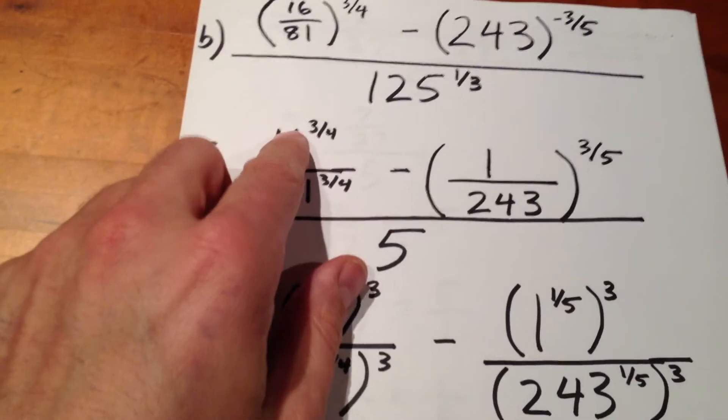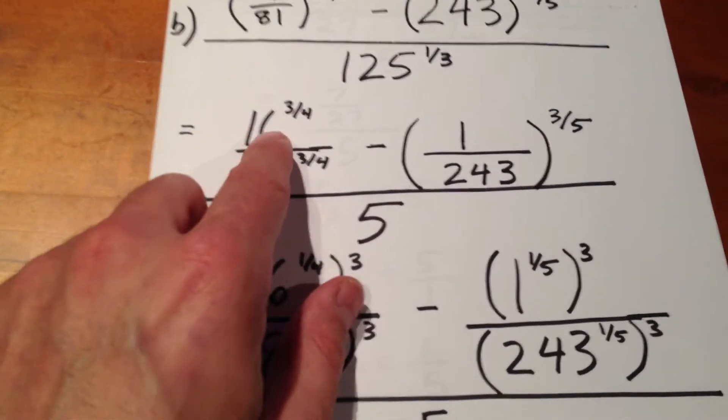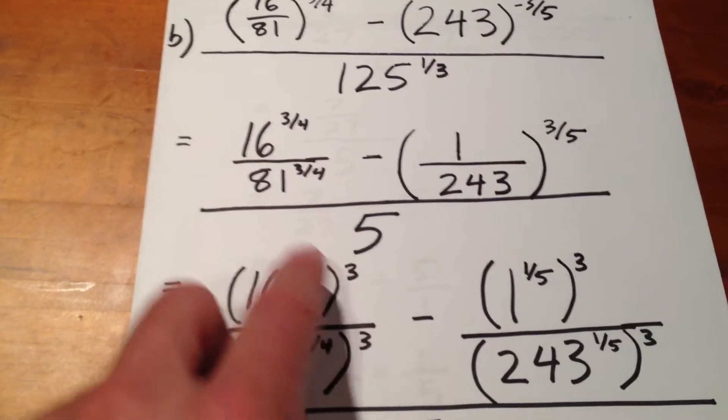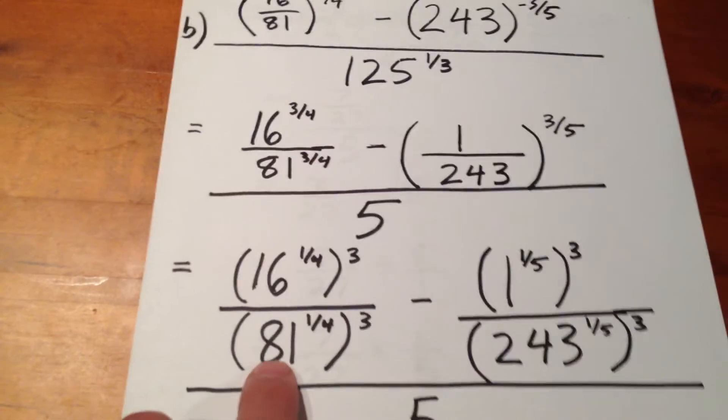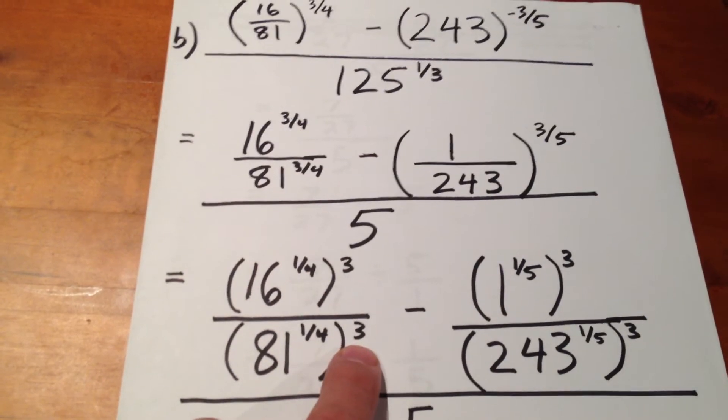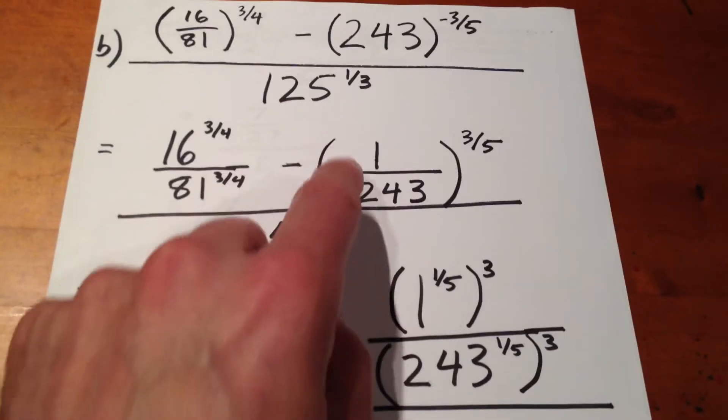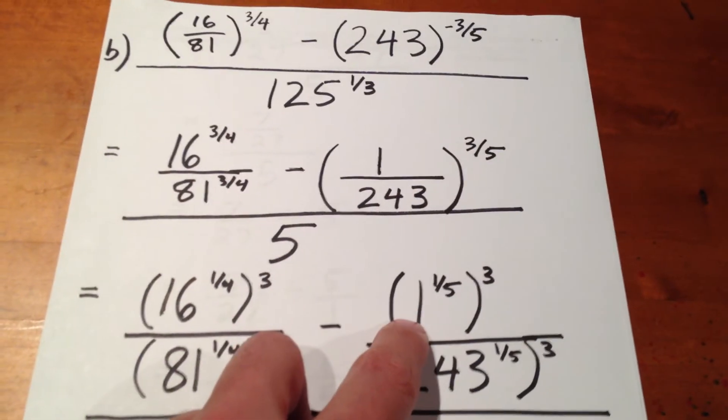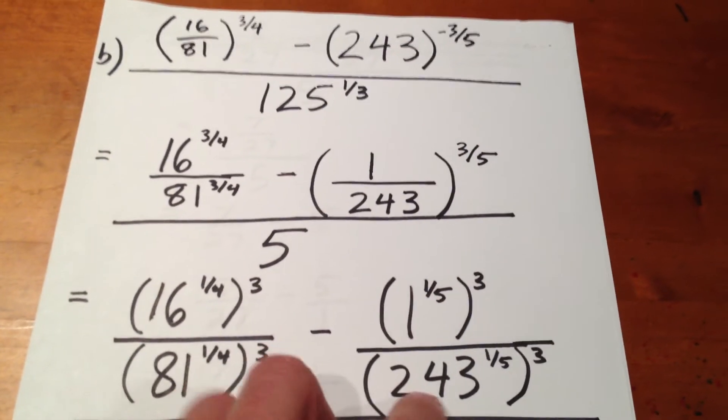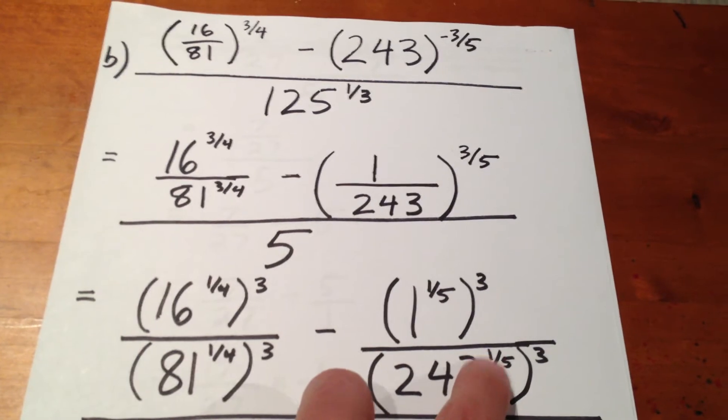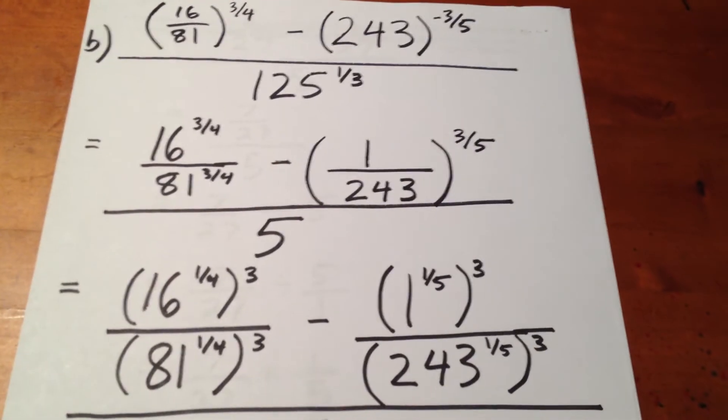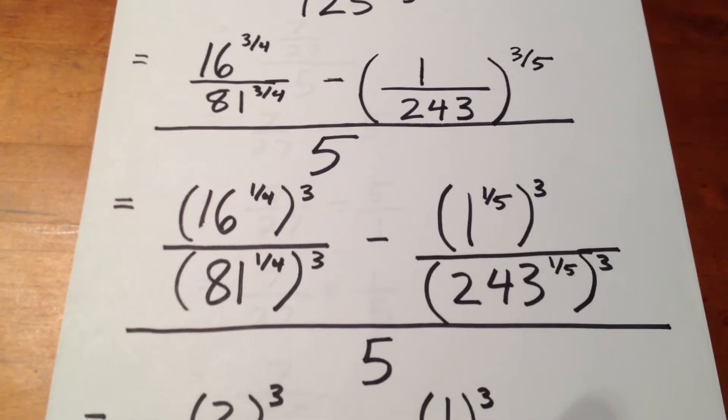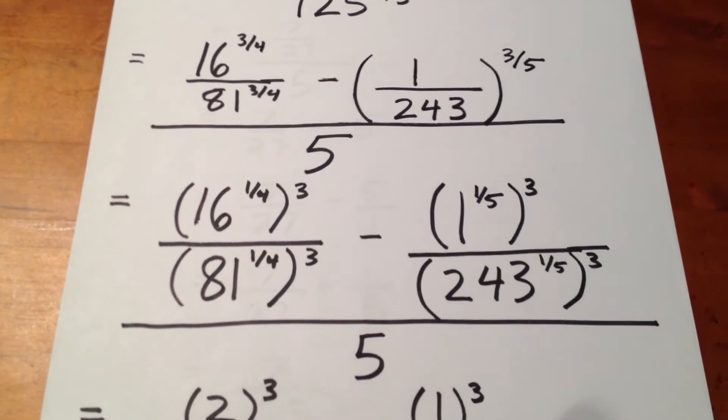Okay, now we focus on this part of our expression. 16 to the three-quarters is like saying 16 to the one-quarters cubed. 81 to the three-quarters is like saying 81 to the one-quarter cubed. 1 over 243 to the three-fifths is like saying 1 to the one-fifth and 243 to the one-fifth, each of those quantities being cubed. And, our denominator that we're carrying along for now is 5, still.